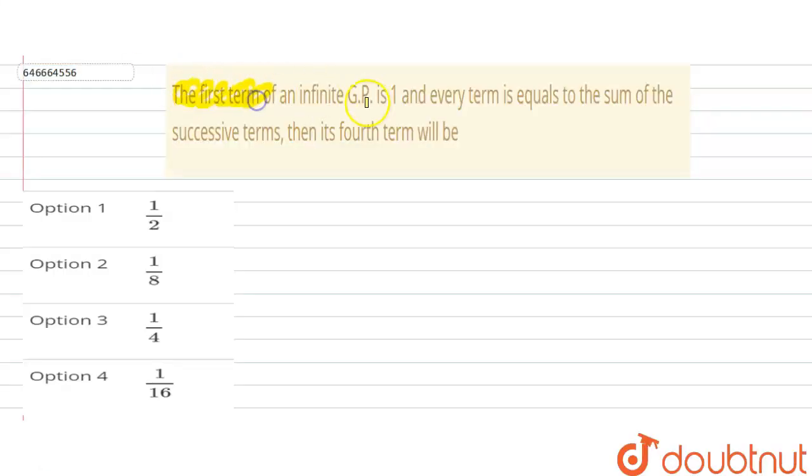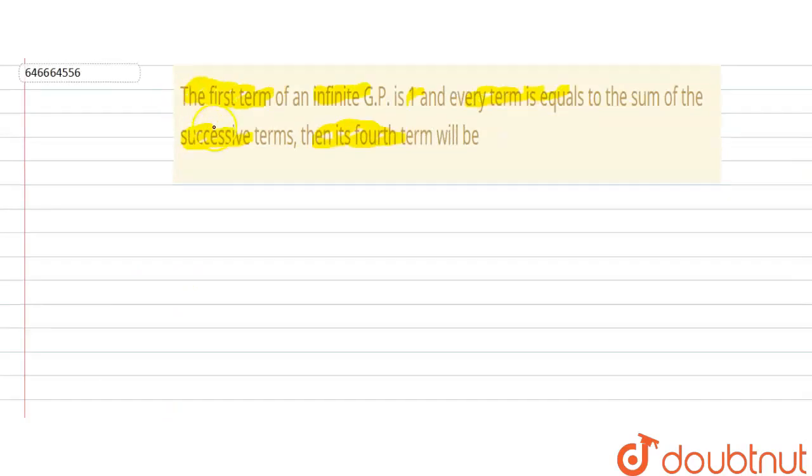given that the first term of an infinite GP is 1 and every term is equal to the sum of the successive terms, then its fourth term will be equal to - options are 1/2, 1/8, 1/4, or 1/16. So let...